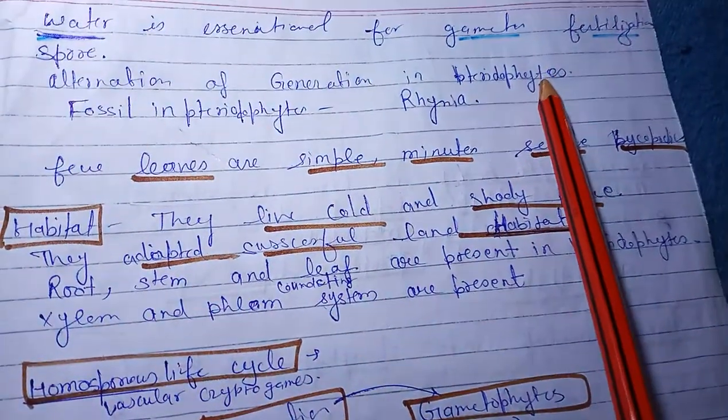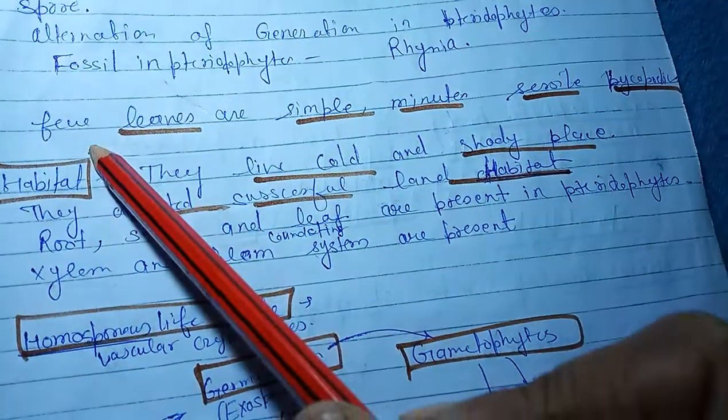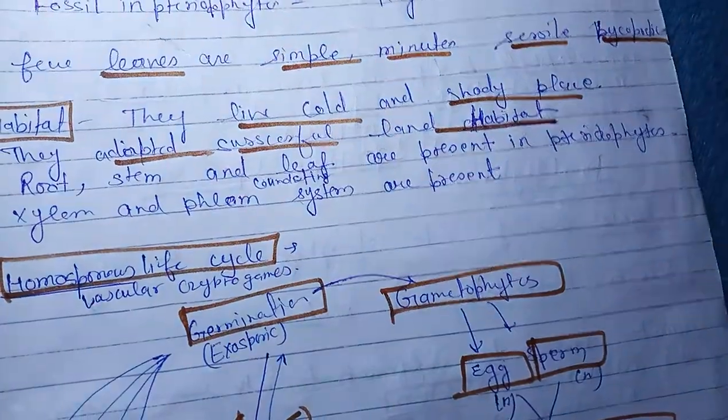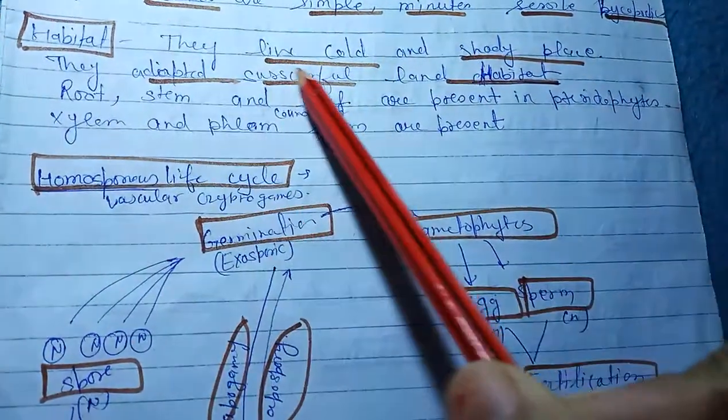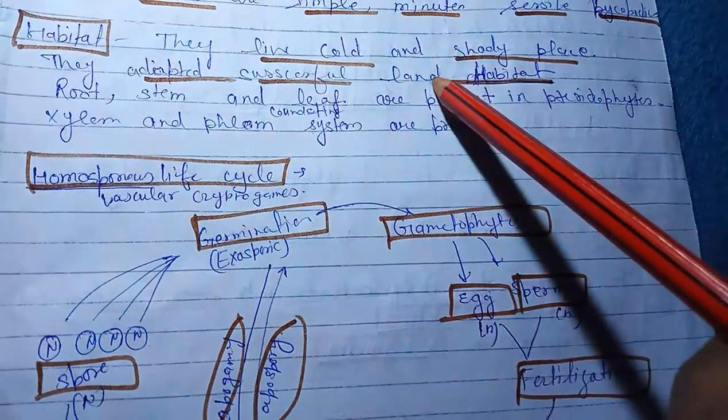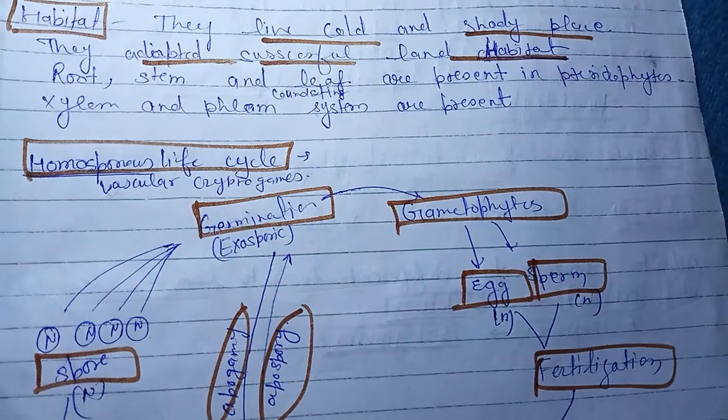Alternation of generation in pteridophytes. Fossils in pteridophytes - Rhynia and Psilophytes are smaller, minute and sessile. The habitat - they prefer cool shady places. They are adapted to land habitat. Root, stem, leaf all of these are present.